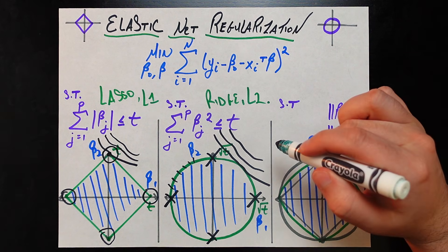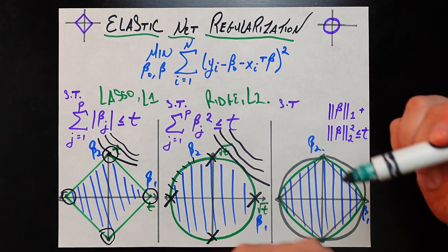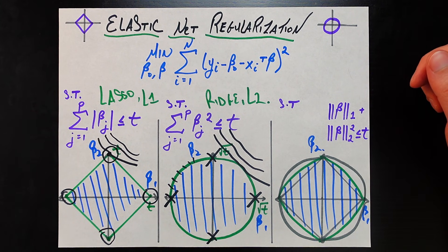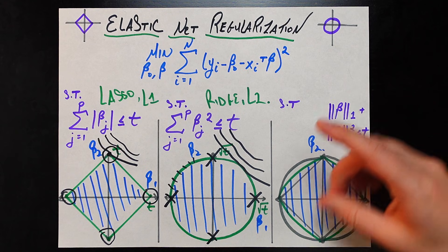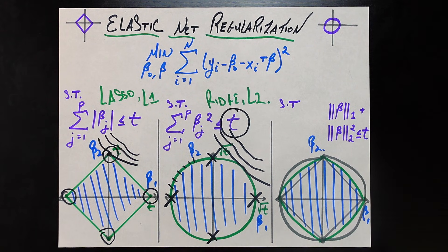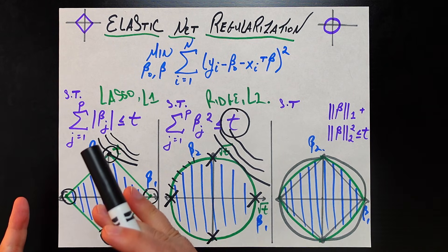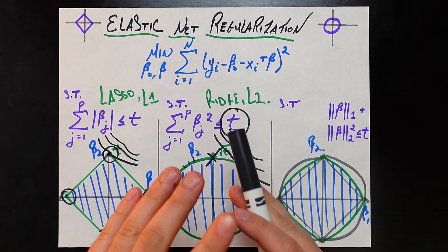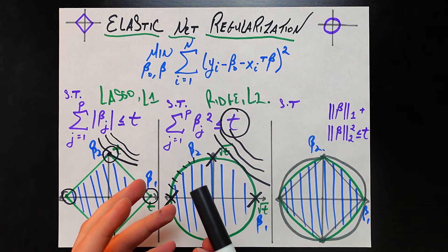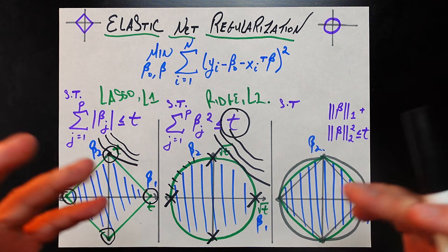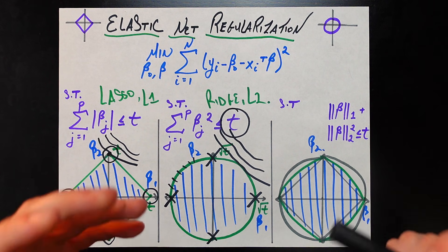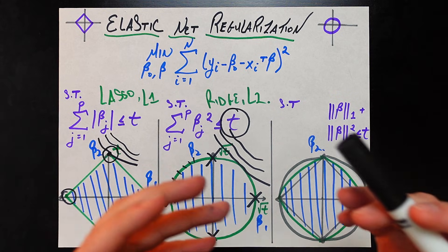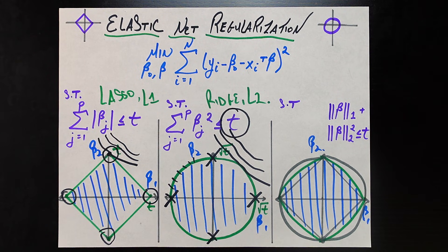Ridge is not setting any coefficients exactly to zero, yet the sum of squares of all coefficients is still bounded by budget t. This means that even useless variables take up some fraction of that budget. Consequently, the more useful variables get arbitrarily shrunk down because some budget is consumed by the useless ones. So ridge has the downside of artificially over-punishing the coefficients of the truly useful variables.